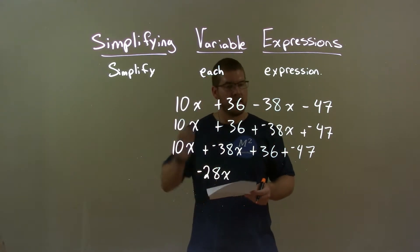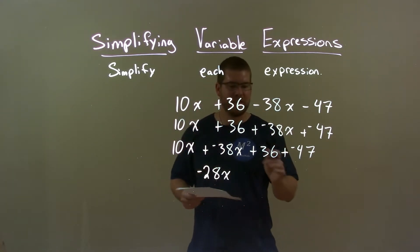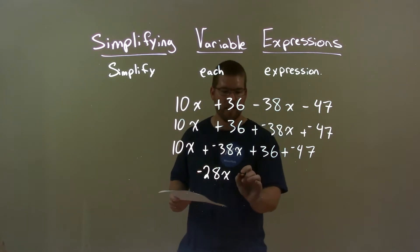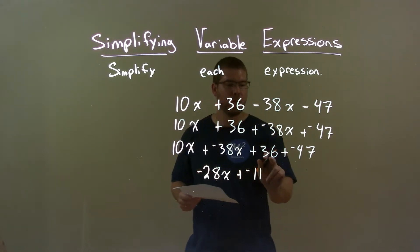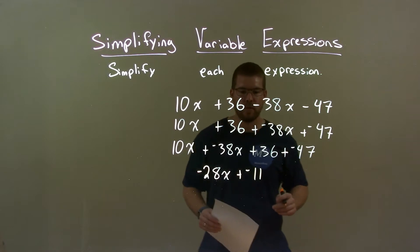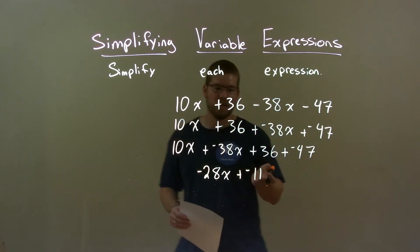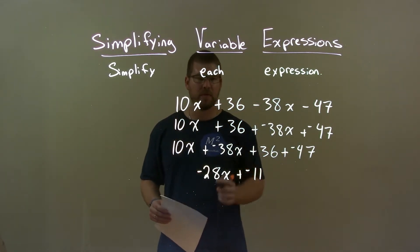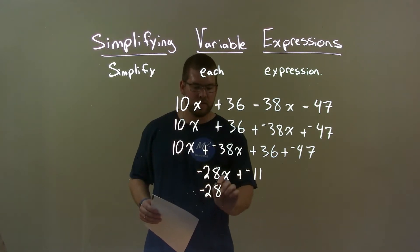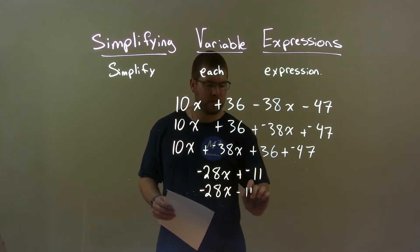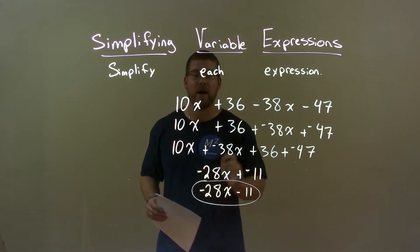Now, 36 and a negative 47 come out to be a negative 11. So, we have a plus a negative 11 here. We're combining positive 36 and a negative 47 and we know subtracting 11 or adding a negative 11, same thing as subtraction. So, we can rewrite this as negative 28x minus 11 and there is now my final answer.